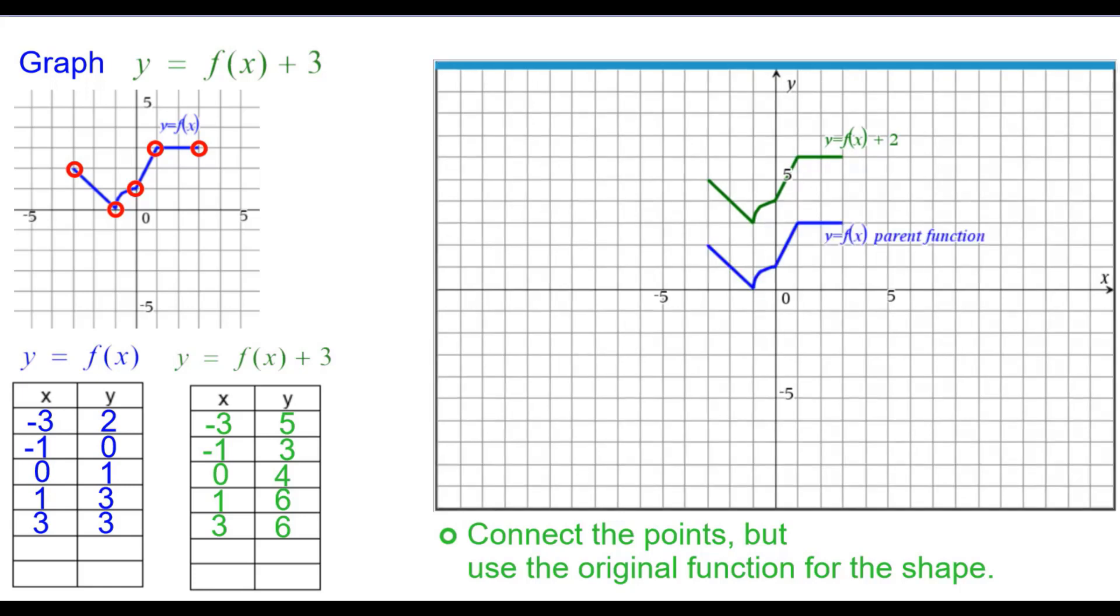Comparing that to the original parent function, we can see that going from blue to green, you're going up 3 from not only these points, but from every point.